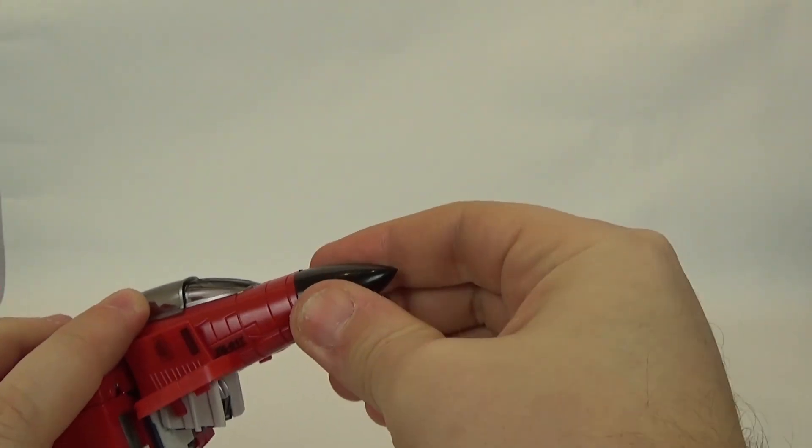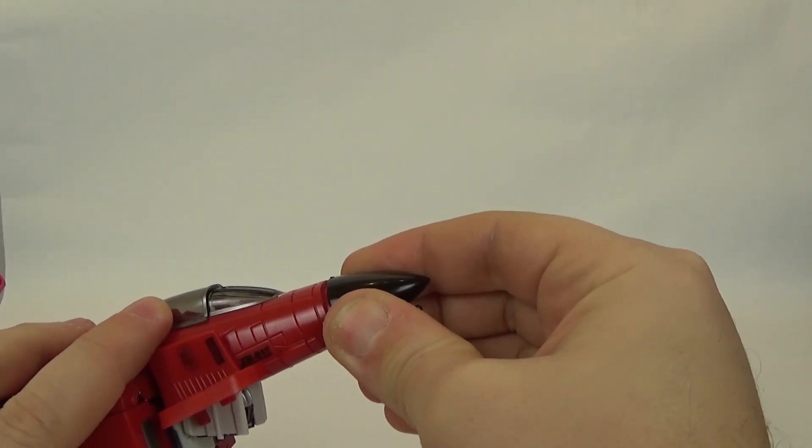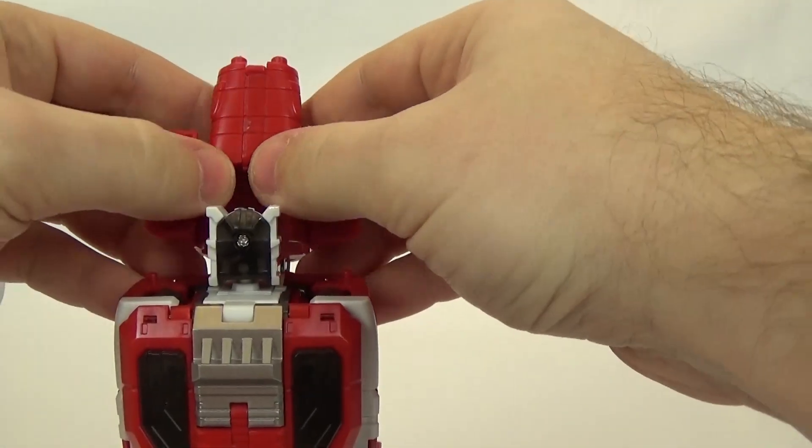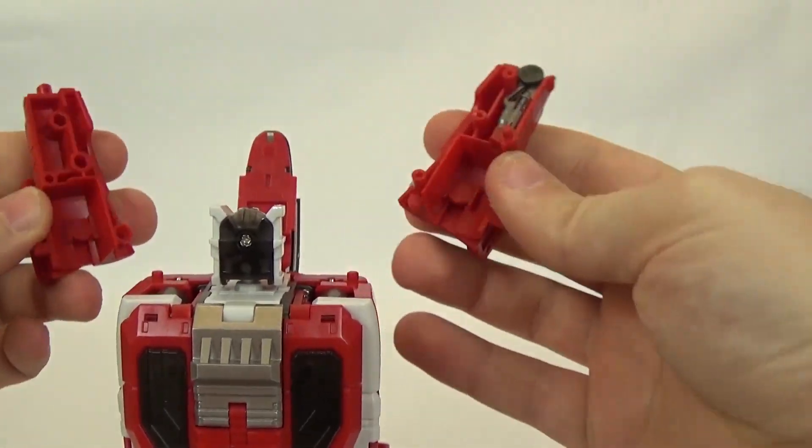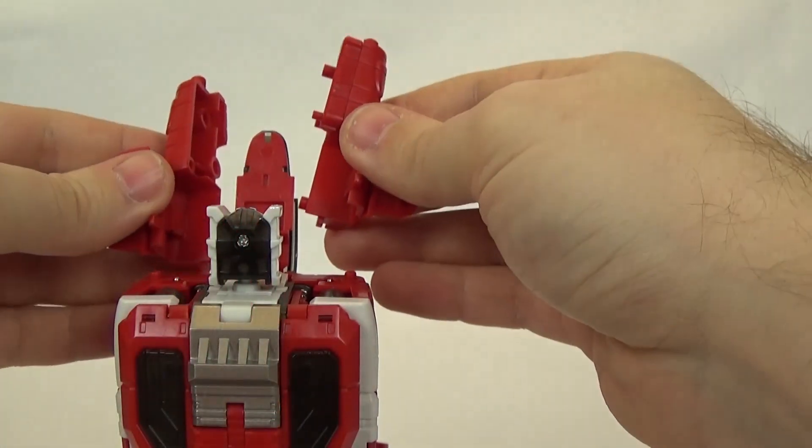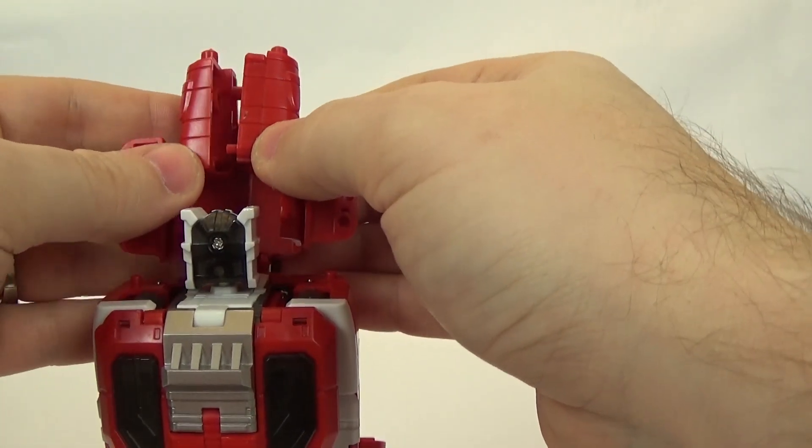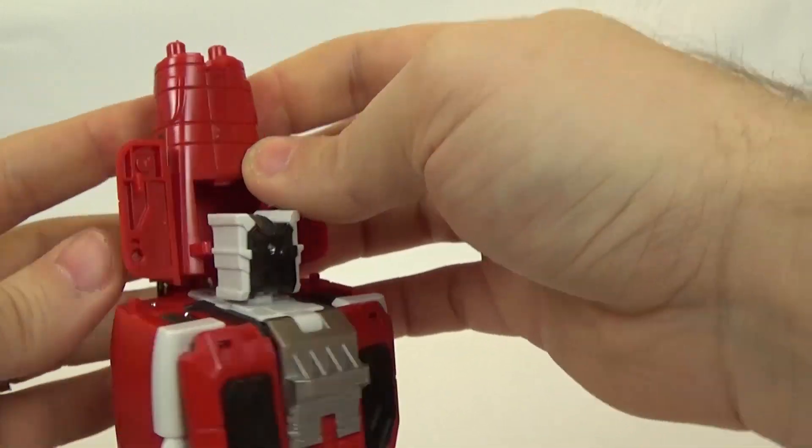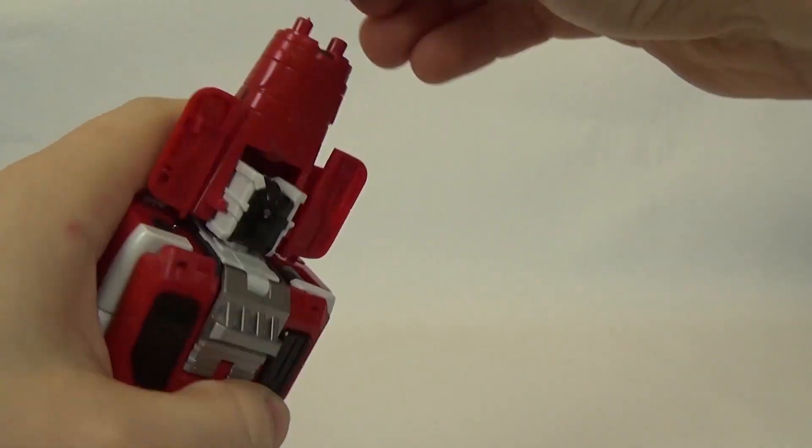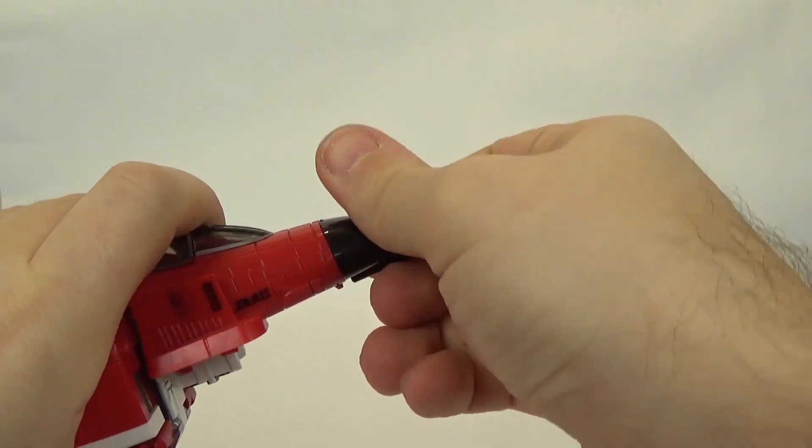The reason is, this black piece right here, the nose cone of the jet, that's what holds everything together. And, there's no glue. There's no screws. There's nothing. It's just held together by that one front piece of the jet. So, everything does kind of want to come apart.